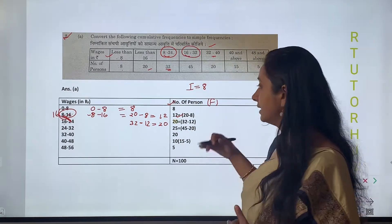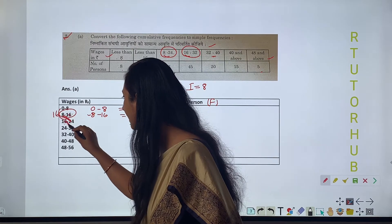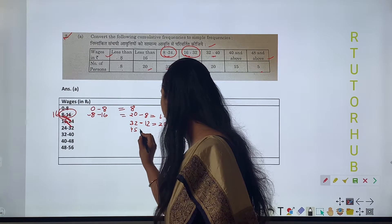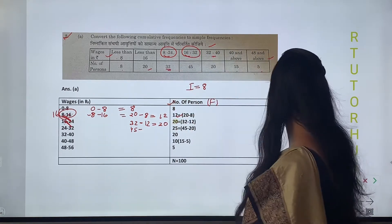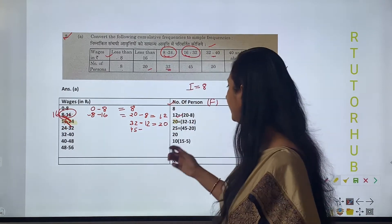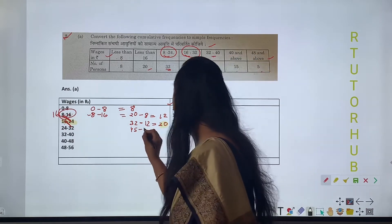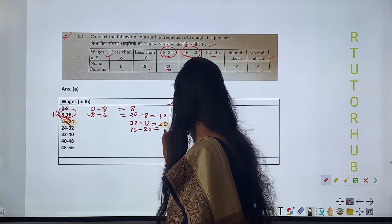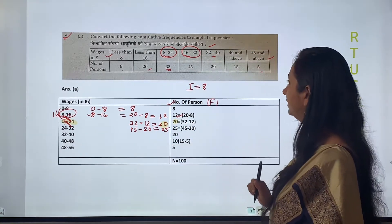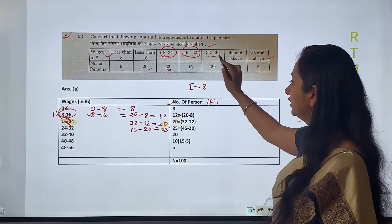Now, the frequency from 16 to 32 is given as 45. We subtract the frequency of 16 to 24, which is 20, from 45. That gives us 25 — this is the frequency for 24 to 32.